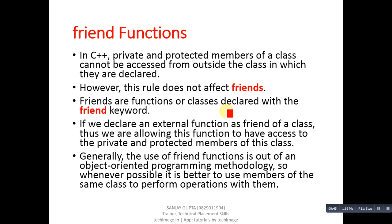Friends are functions or classes declared with the friend keyword. If we declare an external function as a friend of a class, we are allowing that function to have access to the private and protected members of that class. Declaring a function as friend provides authority to that function to access all private and protected members outside the class.